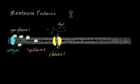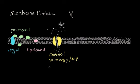Channel proteins can also work in reverse — if your cell has way too much sodium and needs to get rid of it, channel proteins can start pumping it out. Channel proteins generally don't require energy, so no ATP is needed. What's special is that they go with the concentration gradient: from where there's a lot of sodium to where there's very little, moving down the concentration gradient.